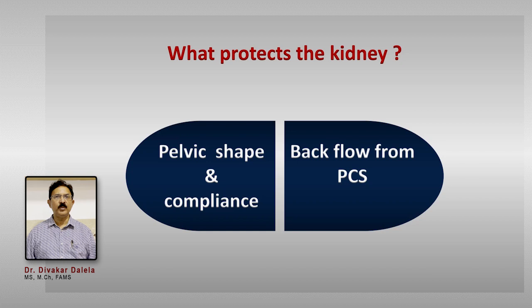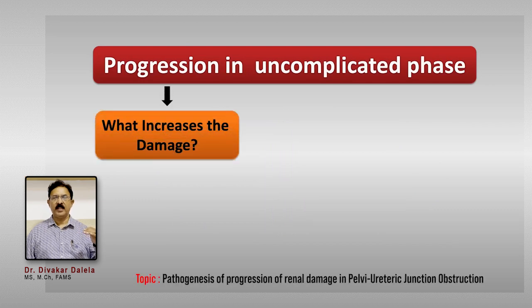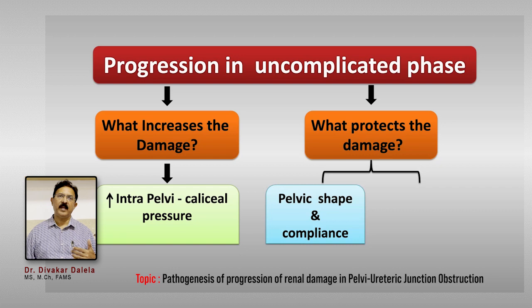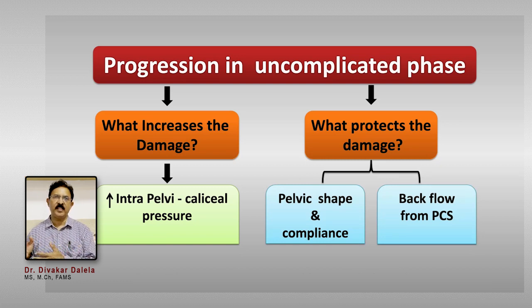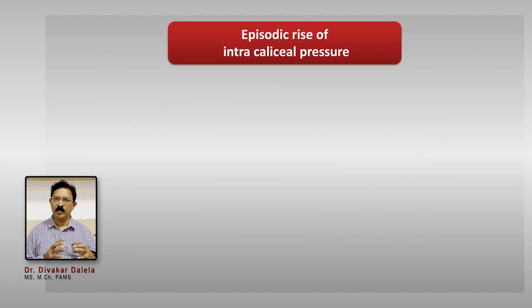So you have a state of balance: what increases the damage is the intrapelvicalyceal pressure and consequent ischemia, and what protects the kidney is the pelvic shape, pelvic compliance, and the backflows. A patient can have a balancing situation — some damaging factors playing a role, some protecting factors playing a role — and the patient is in a state of hydrodynamic balance. In the hydronephrotic kidney, the pressure is constantly high for most times.